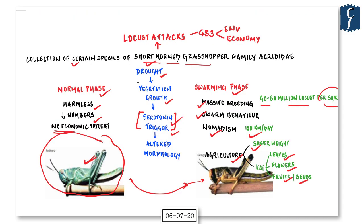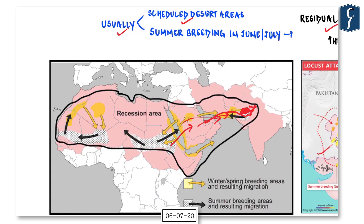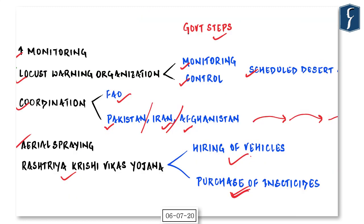For the locust discussion, remember the swarming phase versus normal phase, and the chemical serotonin that triggers the transformation. These locusts are not indigenous to India — they travel from the Horn of Africa, through Middle Eastern countries, Iran, and Pakistan, before finally reaching India. The government has allocated funds under Rashtriya Krishi Vikas Yojana for fighting locusts. The Locust Warning Organization under the Ministry of Agriculture monitors and controls locusts in scheduled desert areas.